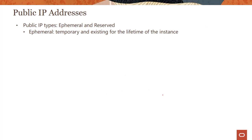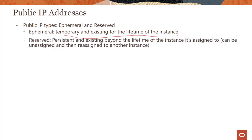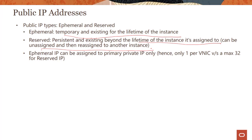There are two kinds of public IP addresses within OCI networking: ephemeral and reserved. Ephemeral is temporary and exists only for the lifetime of the instance — when the instance terminates, the IP address is gone. Reserved is persistent and exists beyond the lifetime of the instance it's assigned to. It can be unassigned and reassigned to another instance, which is useful when downstream applications rely on that specific public IP.